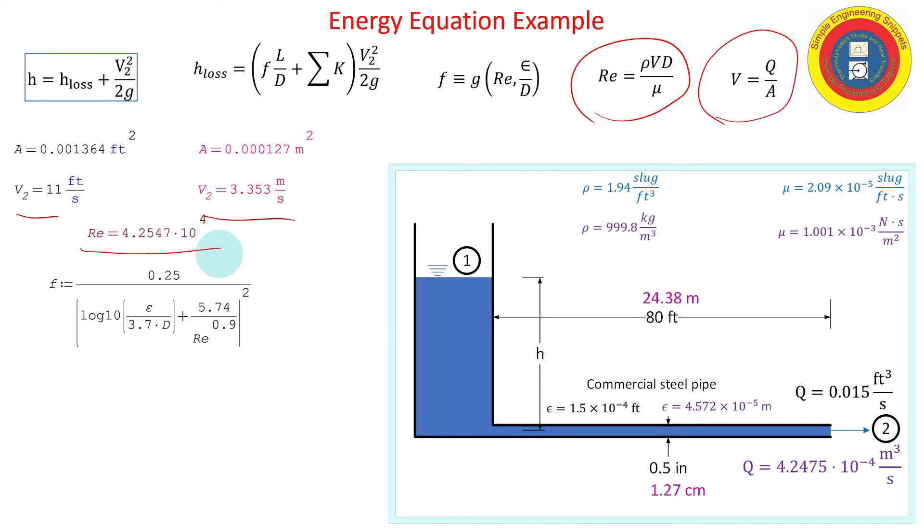Now I need to find the friction factor. Well, I'm going to use the Jain correlation. There are others, but this is an explicit correlation and it gives a decent accuracy, probably as accurate as looking it up off the Moody plot. And so plugging in my Reynolds number, and I have my roughness and the diameter, and I get my friction factor is 0.0276. Okay, well let's go ahead and calculate my velocity head.